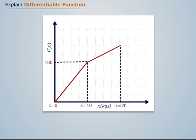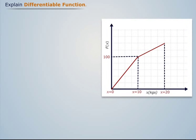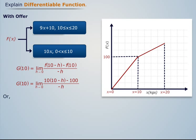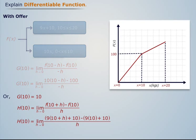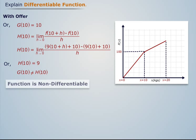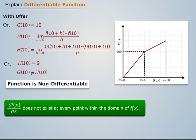Now to check the differentiability of the offer function at x equal to 10, we again calculate g(10) and h(10). First calculating g(10), we can also write the expression in simplified form. Then calculating h(10), we can also write that expression in simplified form. We see that g(10) is not equal to h(10), therefore the function is non-differentiable and its derivative does not exist at every point within its domain.